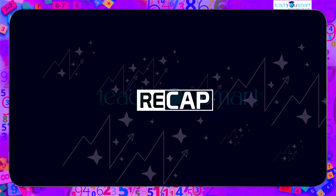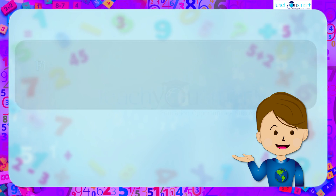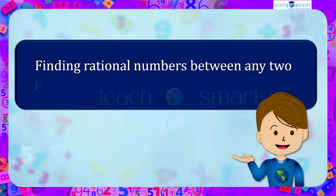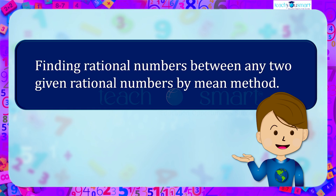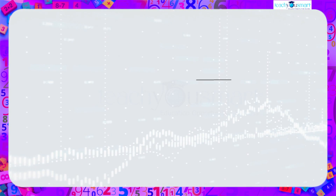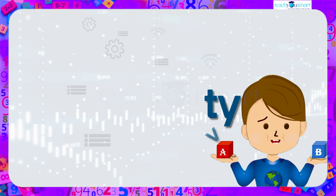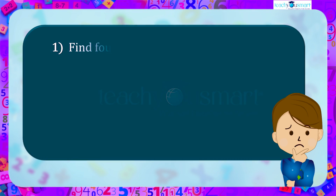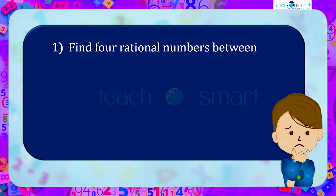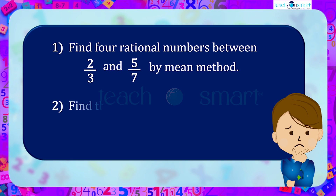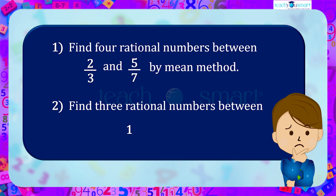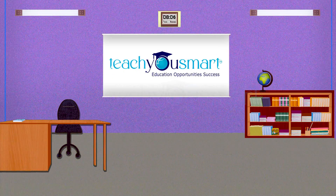Let's recall what we discussed today: finding rational numbers between any two given rational numbers by the mean method. Before winding up, let's check how much you understood by doing an activity. Find 4 rational numbers between 2/3 and 5/7 by the mean method. Find 3 rational numbers between 1/5 and 1/8. That's all for now, see you all in the next class with another interesting chapter.